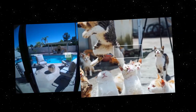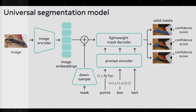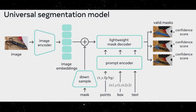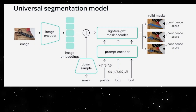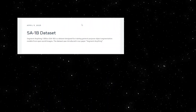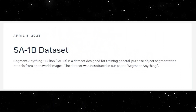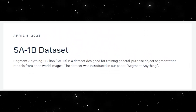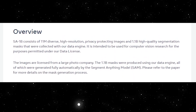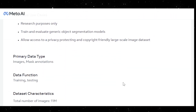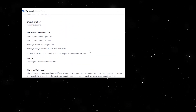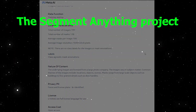The Segment Anything project aims to democratize segmentation by introducing a new task, dataset, and model for image segmentation, as outlined in their research paper. The project's primary goal is to reduce the need for task-specific modeling expertise, training, compute, and custom data annotation for image segmentation.